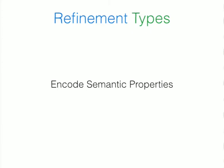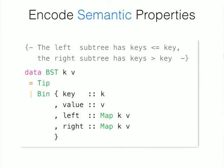Why do we use refinement types? We use them to encode semantic properties that the Haskell type system does not track, but that programmers still care about and that are not easy to reason with. Right now we use comments to encode these properties. For example, in a binary search tree definition, a comment specifies that the left subtree has keys less than the current key and the right subtree has keys greater than the current key.